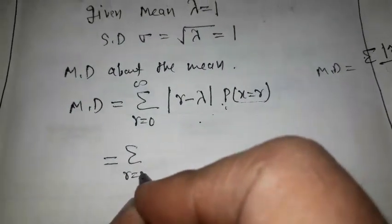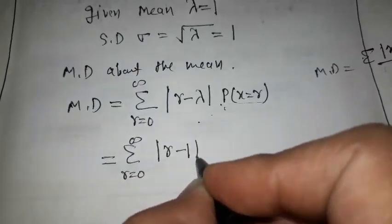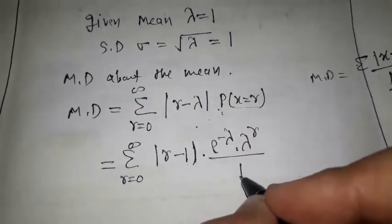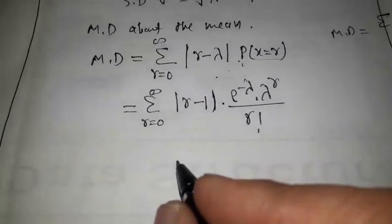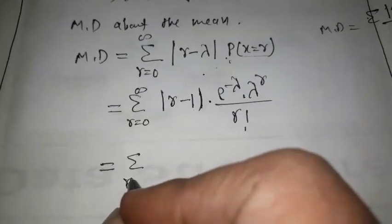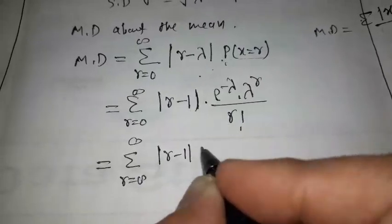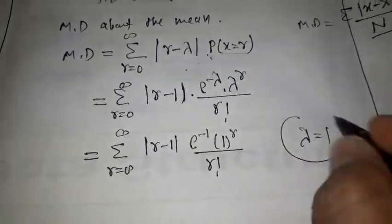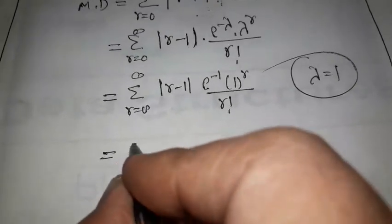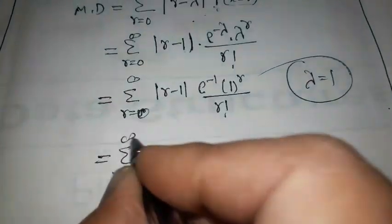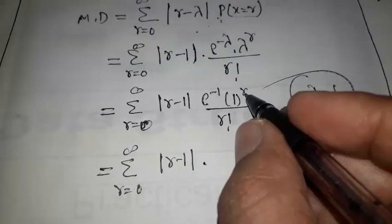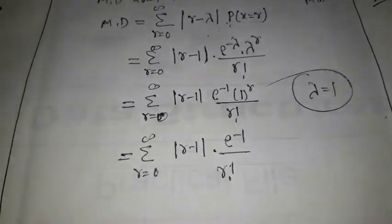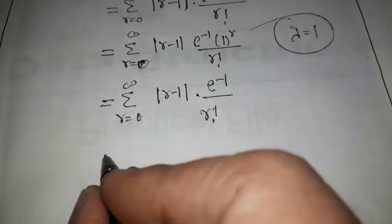So it becomes summation r from 0 to infinity of |r minus 1| into e to the power minus lambda times lambda to the power r upon factorial r. Since lambda = 1, it becomes summation r from 0 to infinity of |r minus 1| into e to the power minus 1 times 1 to the power r upon factorial r. Since 1 to the power r equals 1, this simplifies to e to the power minus 1 upon factorial r.